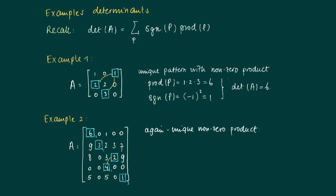Here we have 1 inversion, so the sign of the determinant will be negative. The product is 1 × 2 × 3 × 4 × 6, giving a product of 144. The sign of P is minus 1 to the power of the number of inversions, which is 1, so the sign is negative. Therefore the determinant of A equals −144.